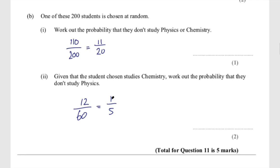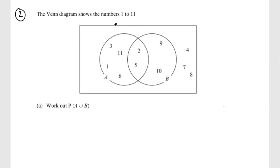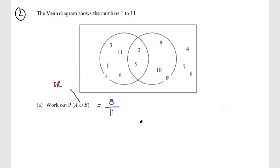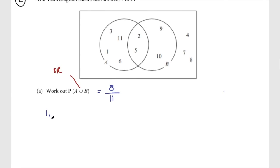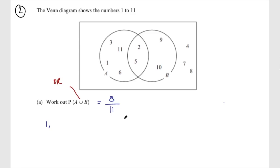Question two: the Venn diagram shows the numbers 1 to 11. Work out the probability of A union B. Remember, you can think of this as 'or', so we want the probability of the number being in A or B. There are only three numbers outside of A or B, so there must be eight numbers inside A or B. The probability is eight out of 11. You might want to list them: 1, 2, 3, 5, 6, 9, 10, 11 — that's eight.